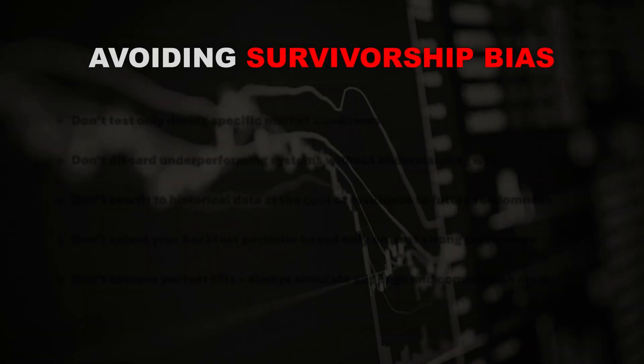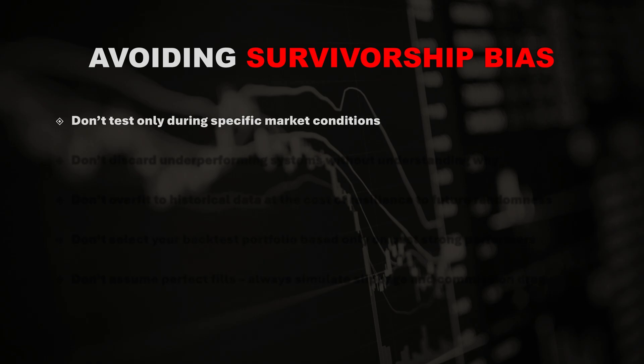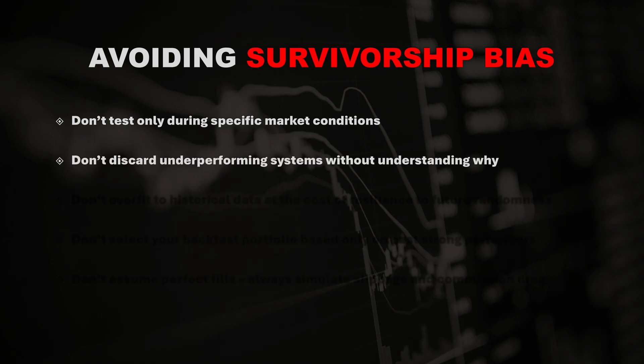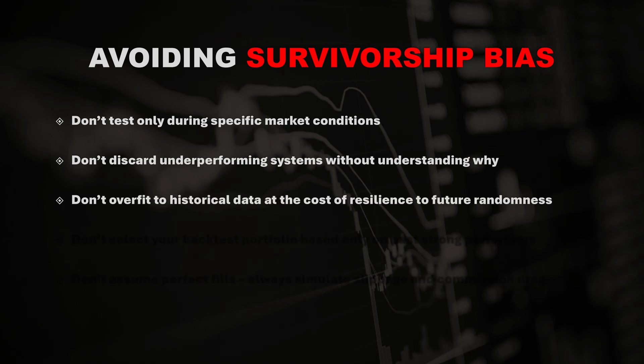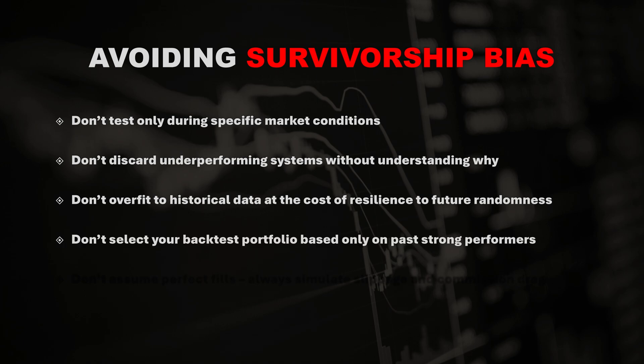There are plenty of other examples of survivorship bias — here are a few you should be aware of and try to avoid. Only testing during specific market conditions, for example testing trend-following systems only during trending markets or mean reversion systems during low volatility. Discarding underperforming systems without first understanding why they failed. Overfitting to historical winners, which makes your system less robust and resilient to future changes in market characteristics. Only backtesting on historical outperformers like FAANG stocks, Tesla, gold, or Bitcoin just because they did well until today, while ignoring similar assets which did not do well. This is a form of recency bias, which is similar to survivorship bias.